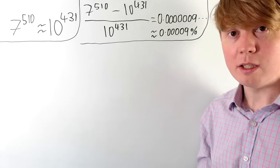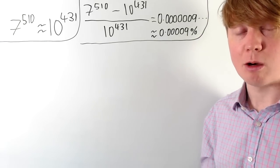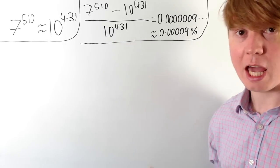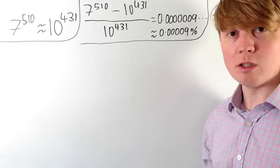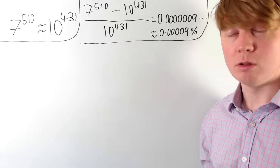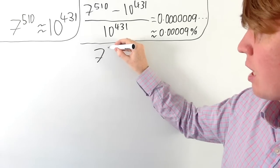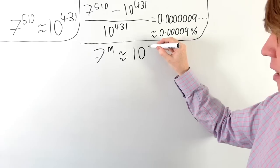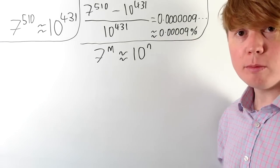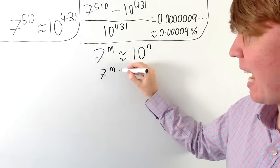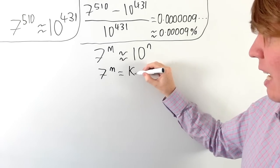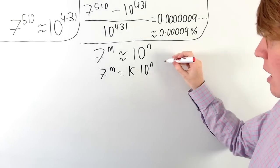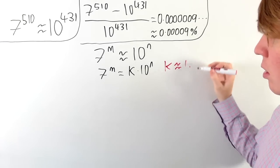In this video, we're going to look at where this approximation came from, and we'll see how we could come up with other approximations, not just using 7 and 10. The key idea is we're looking for two powers: 1 power of 7 and 1 power of 10. So we want 7 to the power of m to be approximately equal to 10 to the power of n. More formally, let's say 7 to the m equals k times 10 to the n, where we want k to be approximately equal to 1, so that it's a good approximation.